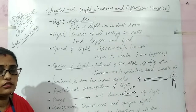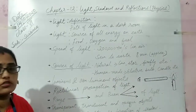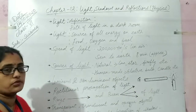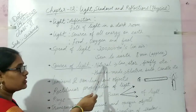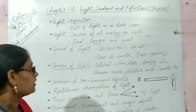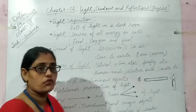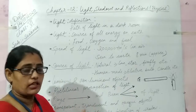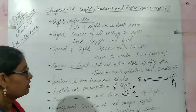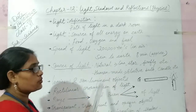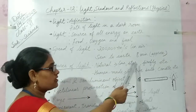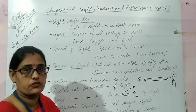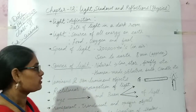Sources of light — there are many sources of light, and we can divide them into two groups. The first one is natural sources of light and the second one is human-made sources. Natural sources include, for example, the sun, stars, fire, etc.